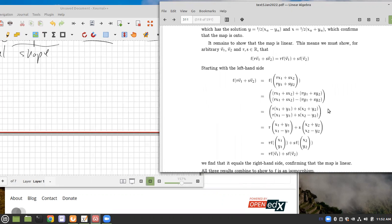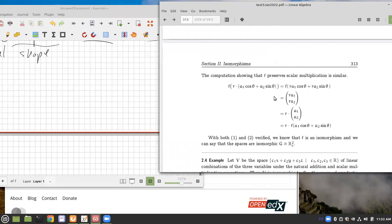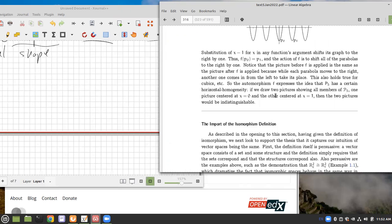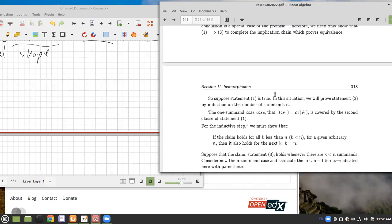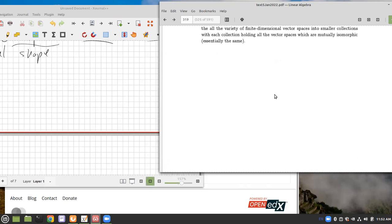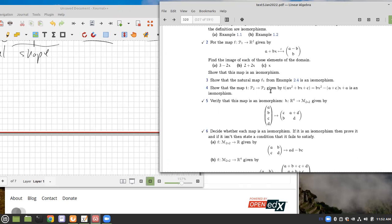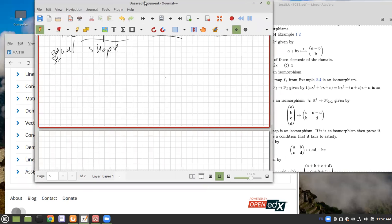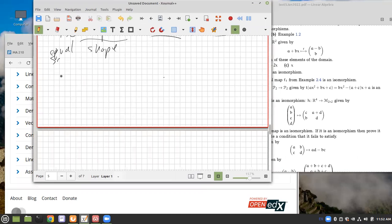And let me see if I can go, there's lots of examples in here in the text, but I want to go to an exercise. Let me just define a map F that takes X, Y, and takes it to X plus Y, X minus Y.